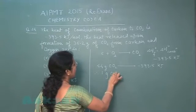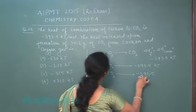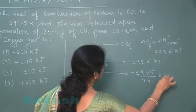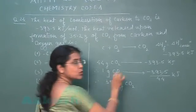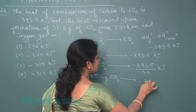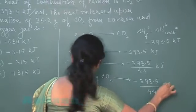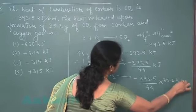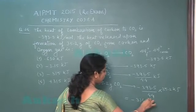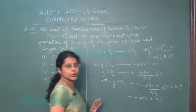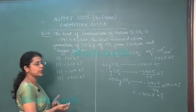When one gram of CO₂ is formed, heat released will be 393.5 divided by 44. So when 35.2 grams of CO₂ is obtained, the heat released will be 393.5 / 44 × 35.2 kilojoule, which equals minus 314.8 kilojoule. So the answer should have the numerical value minus 314.8 kilojoule.